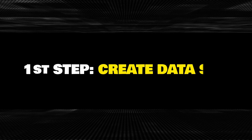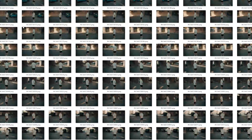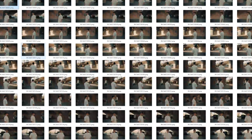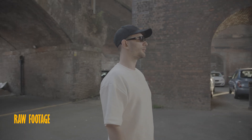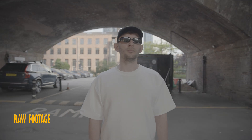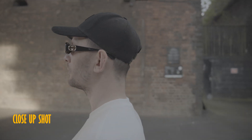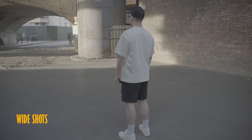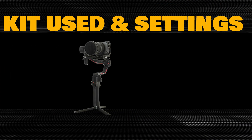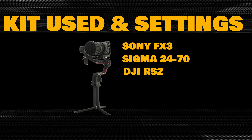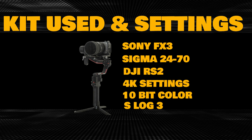To create your first Gaussian splatting render, you need to start by building a dataset. With your camera, orbit around your subject — whether it's a person or an object. Make sure to capture different depths: close-ups, wide shots, and angles from all around. I recorded this footage with my Sony FX3 at 4K in 10-bit color depth with an S-Log color profile.